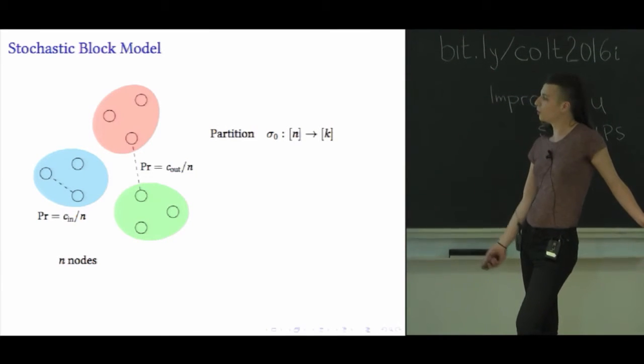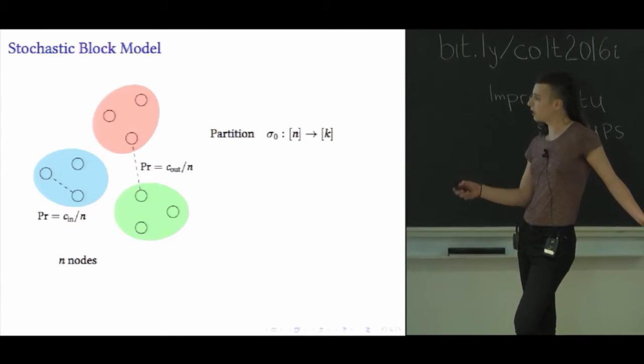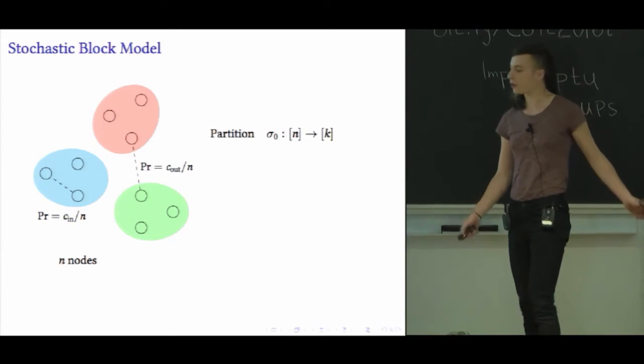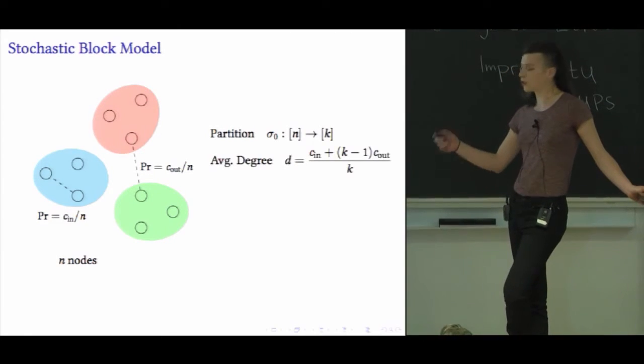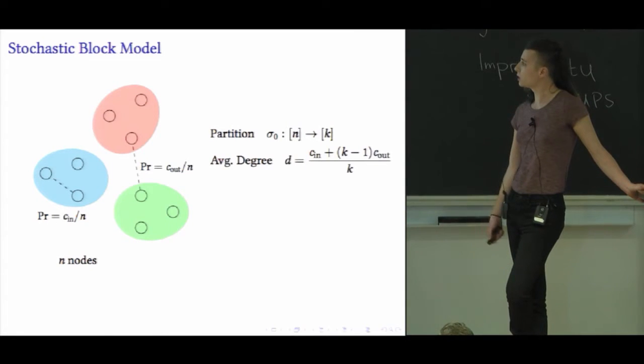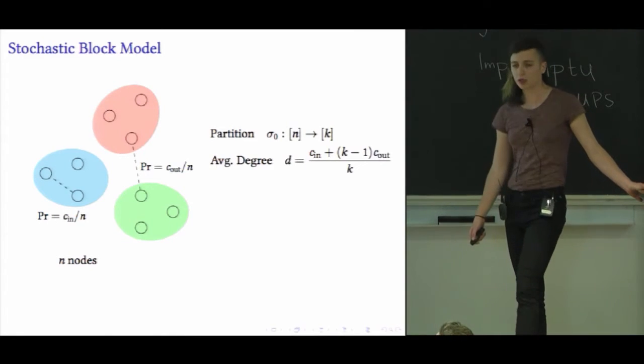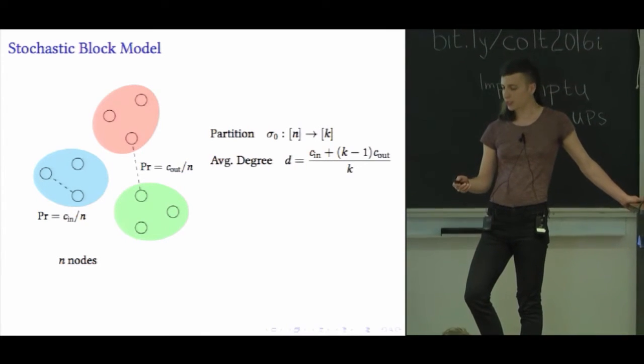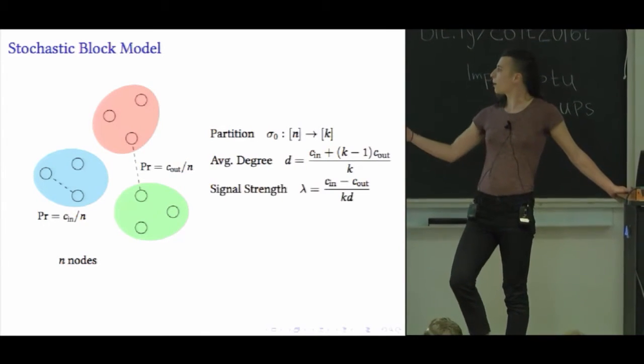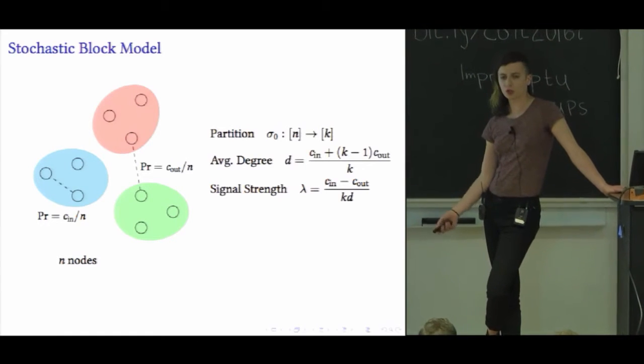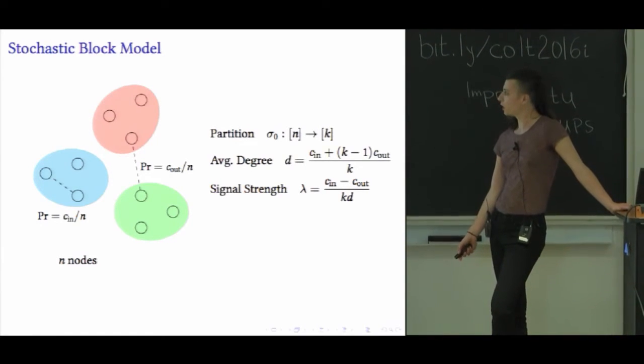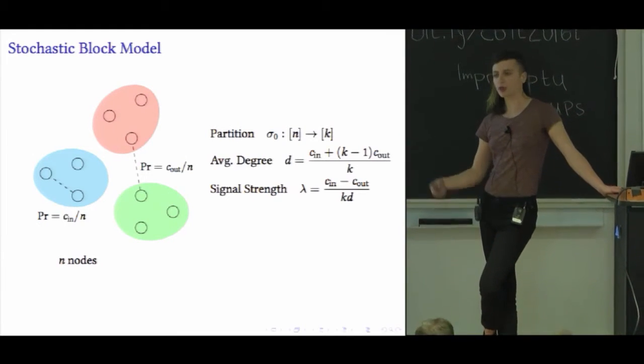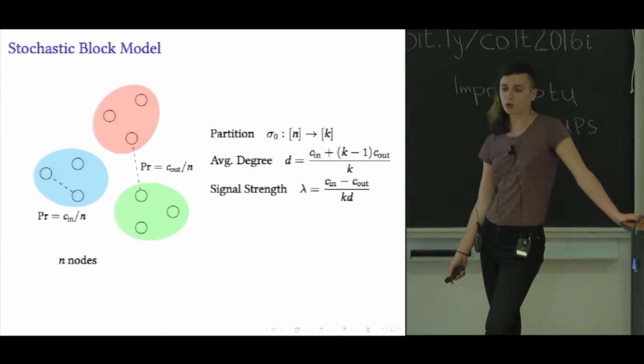It's fashionable to parameterize this model in terms of C_in and C_out, but I'd like to describe our results in terms of two slightly different parameters. These are the average degree of the network overall, which is (C_in + (k-1)C_out)/k, which I'll call D. The other parameter is signal strength or signal-to-noise ratio, which I'll call lambda, which is (C_in - C_out) normalized by k times the average degree.